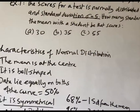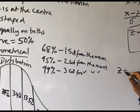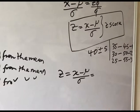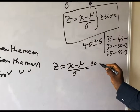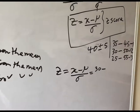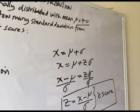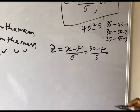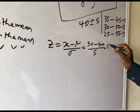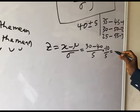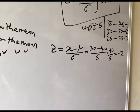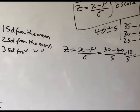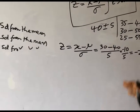Now let's answer using the z-score formula. A student has scored 30: z equals x minus mean divided by standard deviation, so z equals 30 minus 40 divided by 5 equals minus 10 divided by 5 equals minus 2. This means a student scoring 30 lies within two standard deviations from the mean.